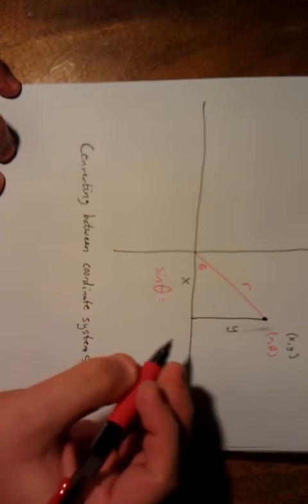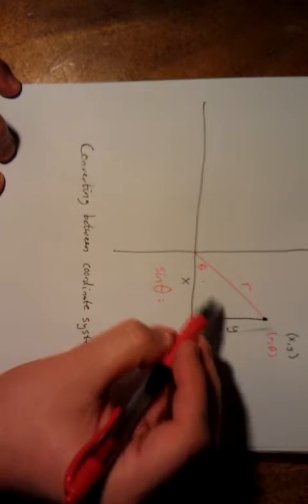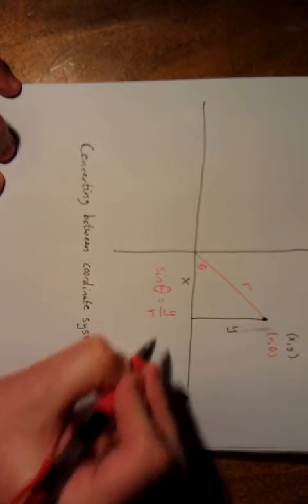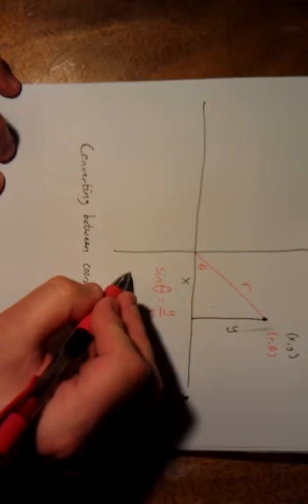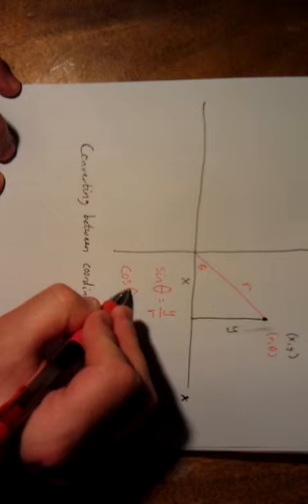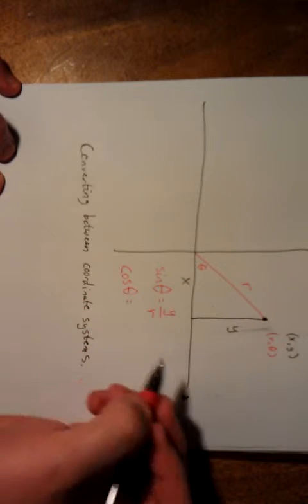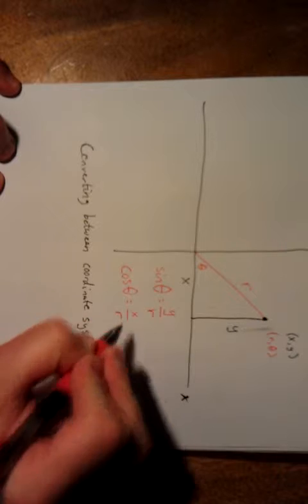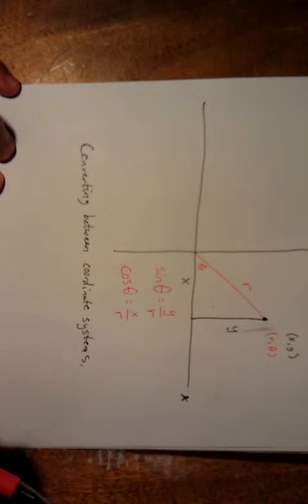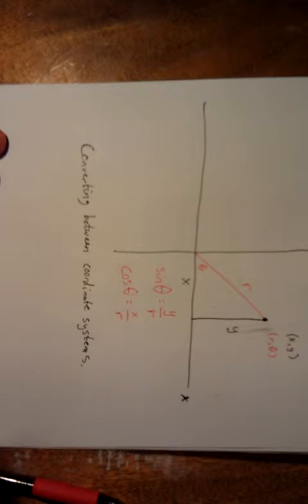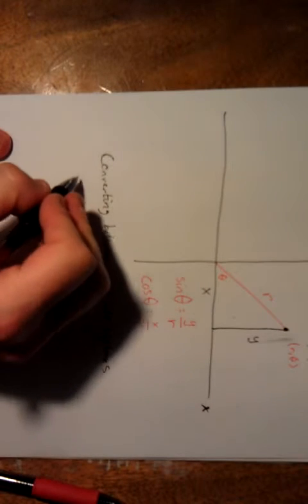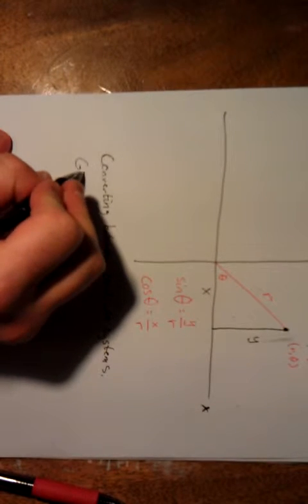The sine of theta, if we think back to SOHCAHTOA, sine would be the opposite over the hypotenuse. This would be y over r. In addition, we also have the cosine of this angle. The CAH of SOHCAHTOA tells us that this is the adjacent side over the hypotenuse. That would be x over r. Now with a little bit of algebra, we can convert those two expressions into the following.